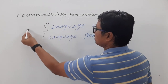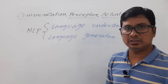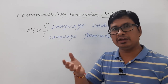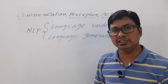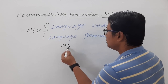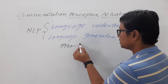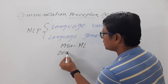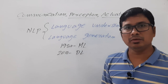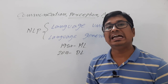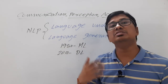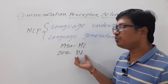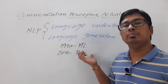Language understanding and language generation come under the domain called natural language processing. In NLP, earlier we used expert systems from the 1950s to 1980s. From the 1980s we started using machine learning techniques, and from 2010 we started using deep learning models to solve NLP problems. This shift happened because we now have a large amount of data, and when we have large data we go for deep learning.